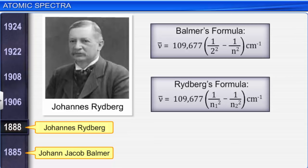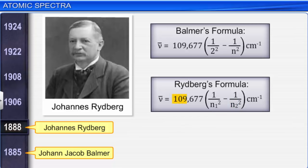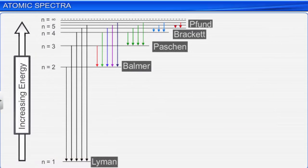The Rydberg equation may be written as: nu bar = 109677 × (1/n₁² − 1/n₂²) per centimeter, where n₁ = 2, 3, etc. and n₂ = n₁+1, n₁+2, etc. The value 109677 per centimeter is called the Rydberg constant for hydrogen. The first five series of lines corresponding to n₁ = 1, 2, 3, 4, and 5 are known as Lyman, Balmer, Paschen, Brackett, and Pfund series respectively.